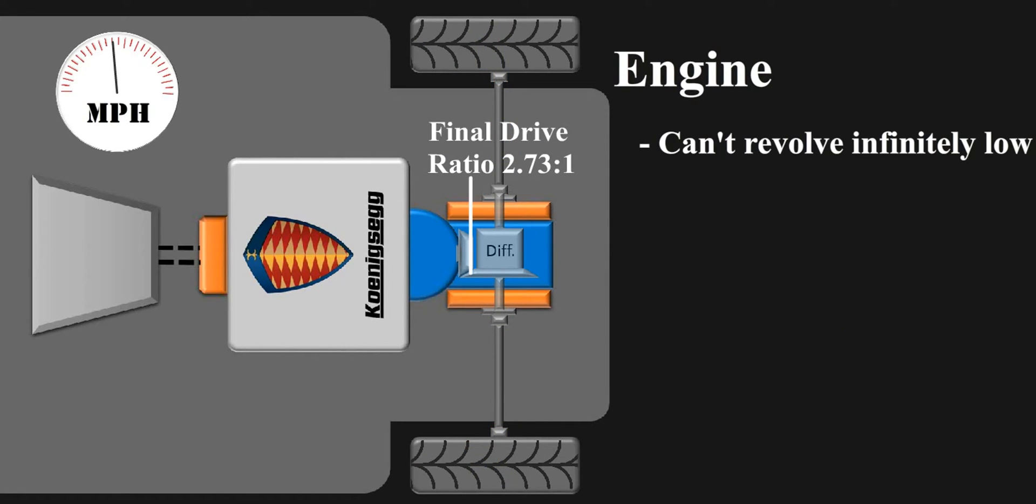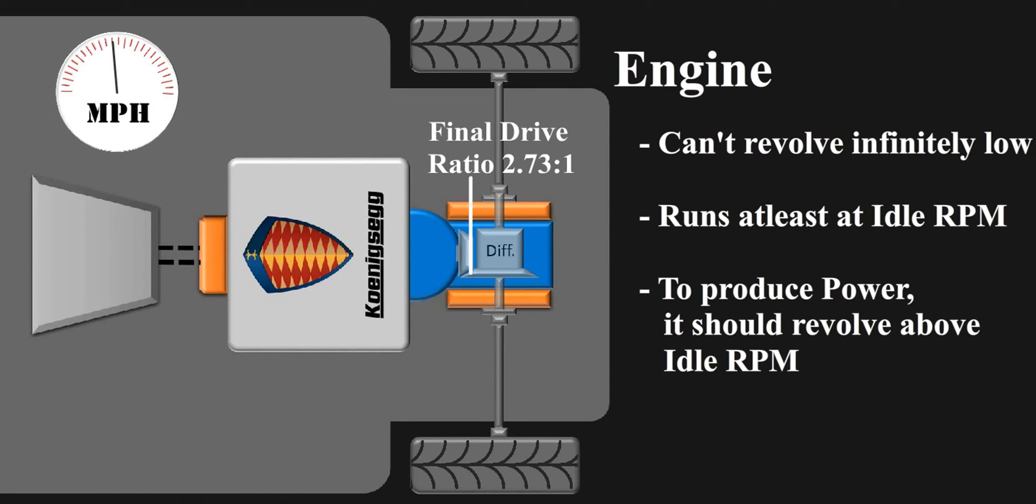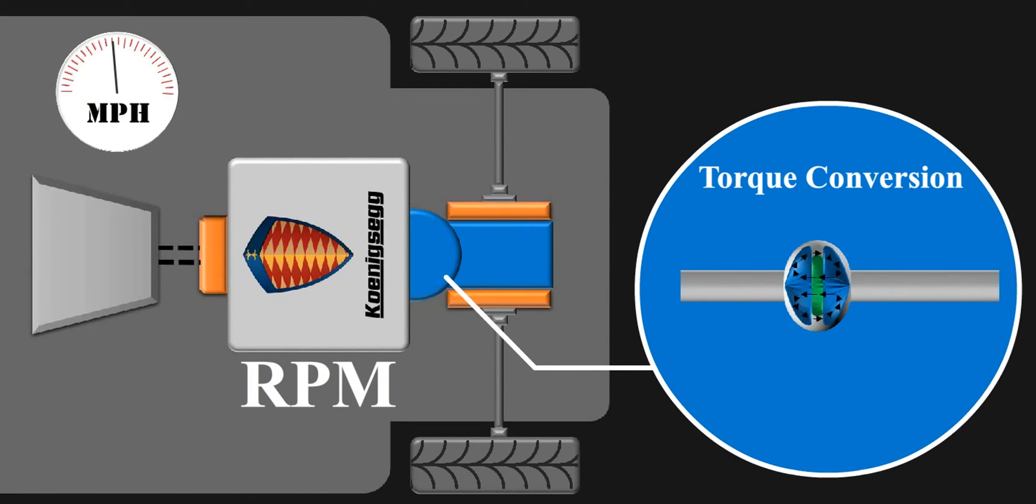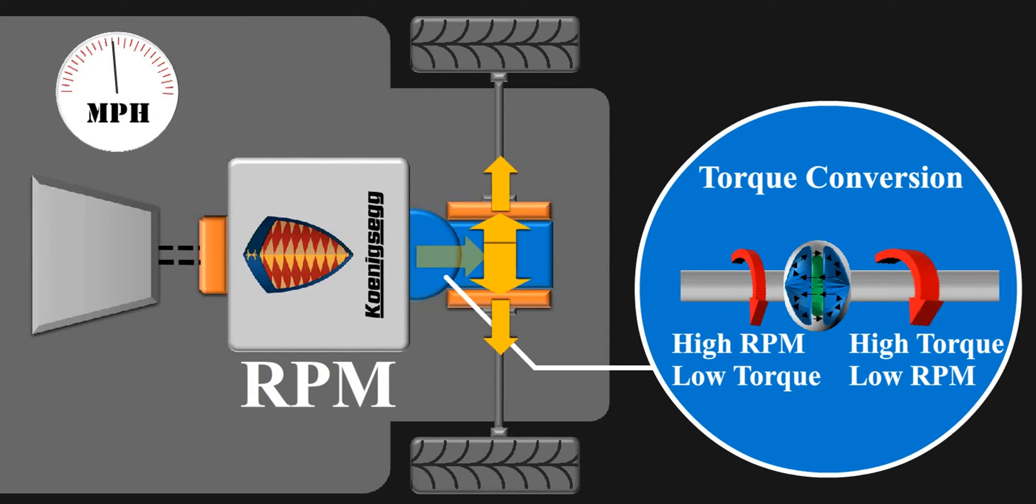Engine cannot rev infinitely low. It runs at least at idling rpm and as we want power from engine to assist motors, the engine should rev above idle rpm to make power. The engine rpm is lot higher than what it needs to put from here to smoothly drive the vehicle. To solve this problem comes the role of second stage of hydrocoupe that is torque conversion. It takes power from the engine and converts it to high torque and low rpm as required.